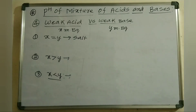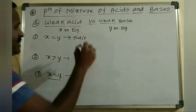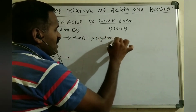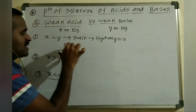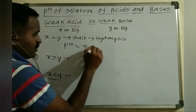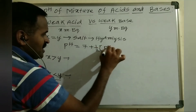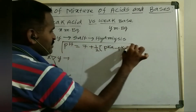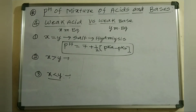A salt is formed which will definitely undergo hydrolysis, since it is formed from a weak acid versus weak base. To find the pH, use the formula: pH equals 7 plus one-half times (pKa minus pKb). This formula applies whenever milliequivalents of weak acid equals milliequivalents of weak base.